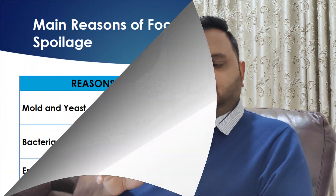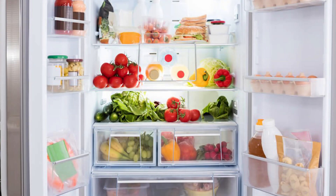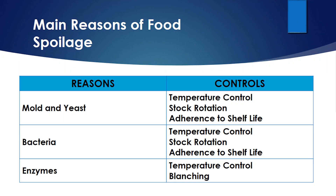How do we control spoilage? One of the major controls is temperature control. For mold and yeast, if you put the food inside a proper temperature-controlled environment, they cannot grow — same goes for bacteria. Also, stock rotation, which is first in, first out or FIFO. Through stock rotation, the food which is about to expire gets consumed faster and as a result it doesn't get spoiled.